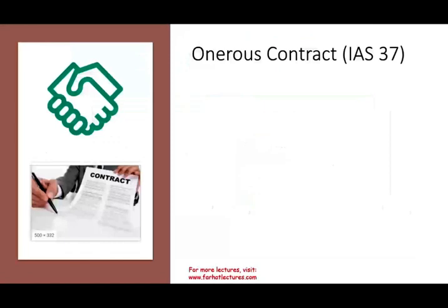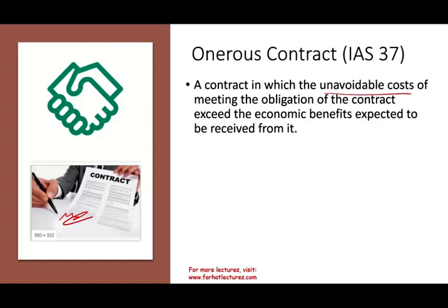Let's talk about onerous contracts. It's a contract that you signed but you made a mistake — the cost of the contract is greater than the benefit. Every time you sign a contract, your expectation is that the benefit from that deal is greater than the cost. When the unavoidable cost of the contract exceeds the economic benefit to be received from it, then you have a future loss that you have to book. Simply put, the cost in that contract is greater than the benefit.